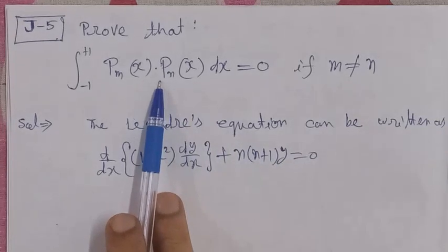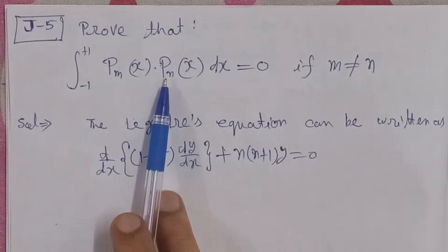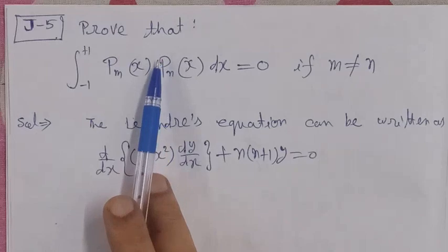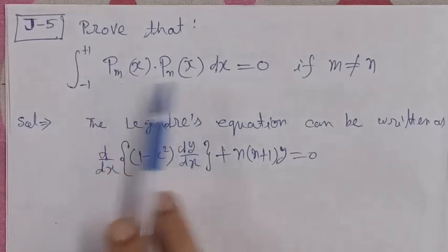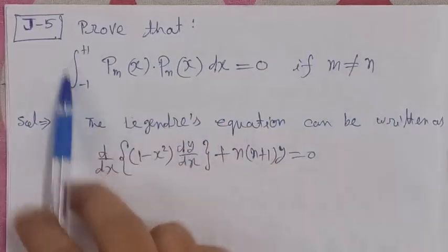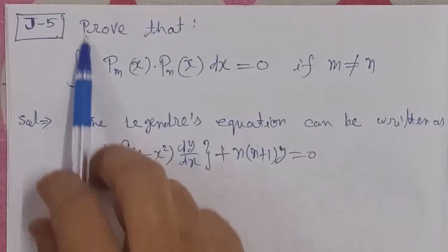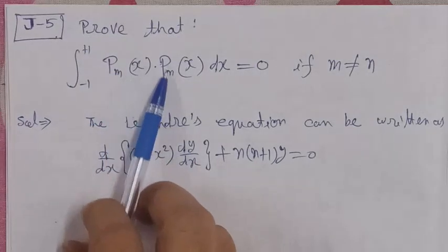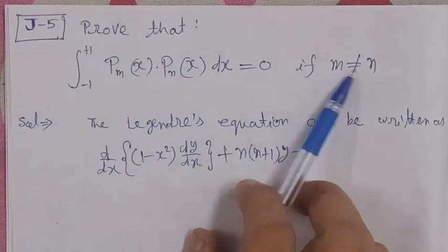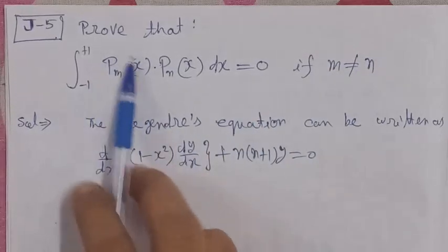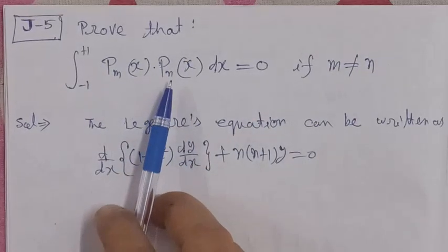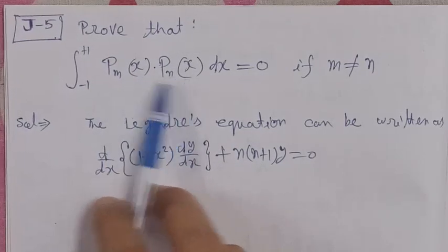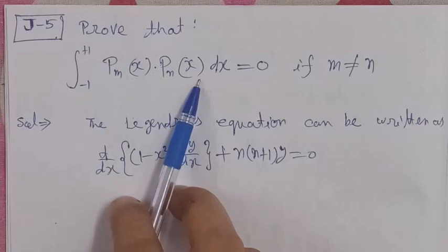Bismillahirrahmanirrahim. We are studying the orthogonal property of a special function — the Legendre function. We will prove that the integral from minus 1 to plus 1 of Pₘ(x)·Pₙ(x) dx is equal to 0, when m does not equal n, where Pₘ and Pₙ are Legendre polynomials of degree m and n respectively.